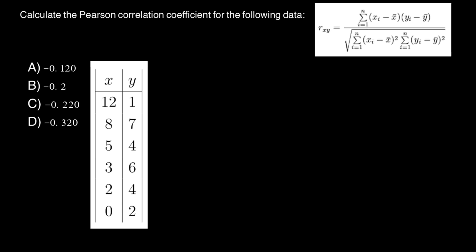As you see, the first step would be for us to find X̄, which is the mean of the X data set. To find the mean, we have to add these numbers: 12 plus 8 is 20, plus 5 is 25, plus 3 is 28, plus 2 is 30. We divide 30 by six, and 30 divided by six is going to be five.